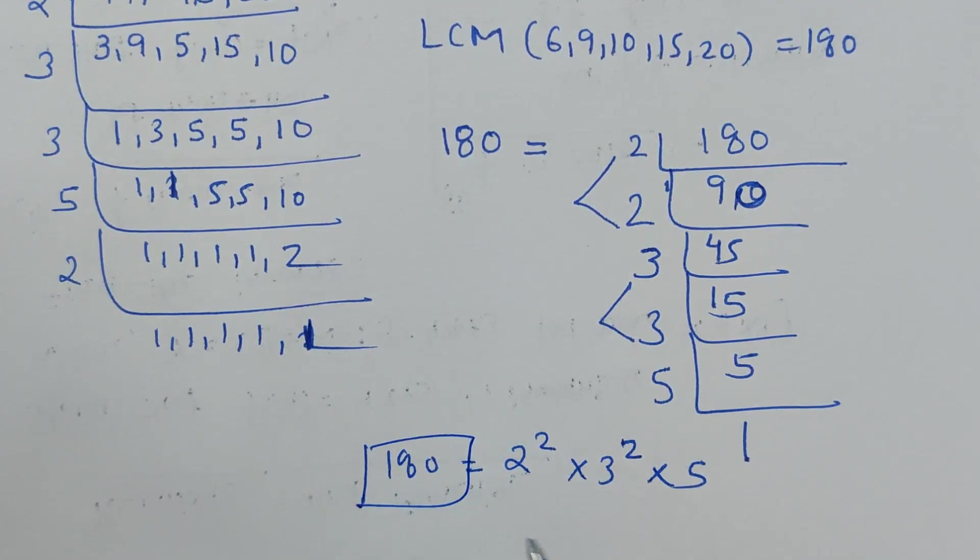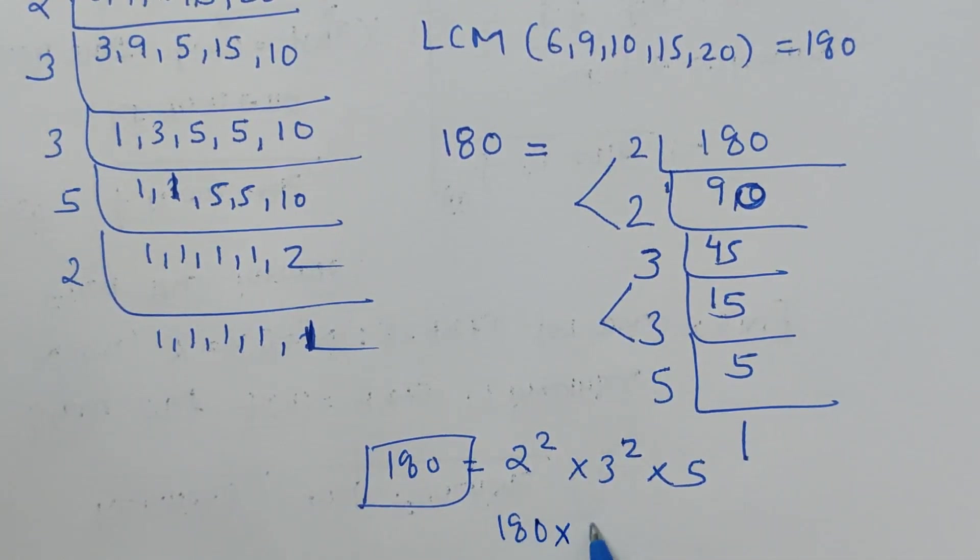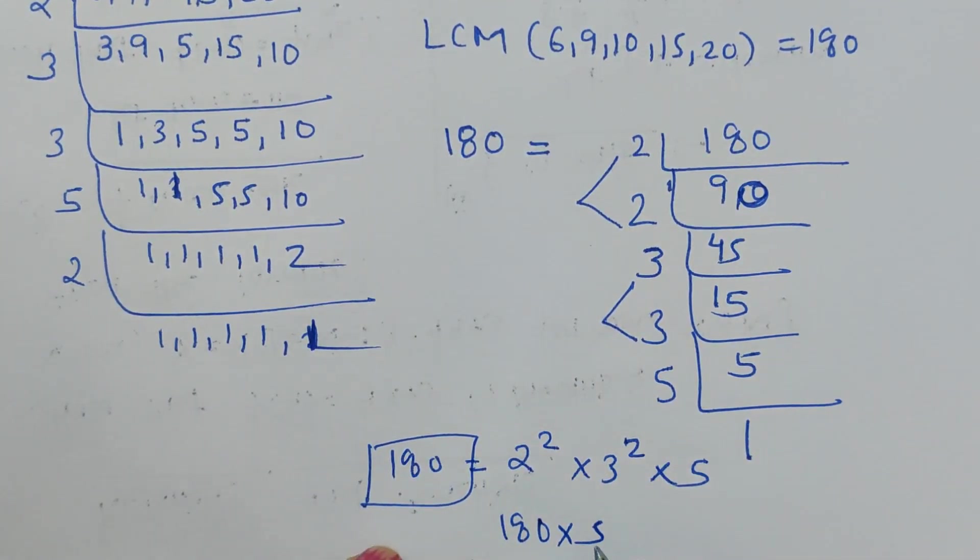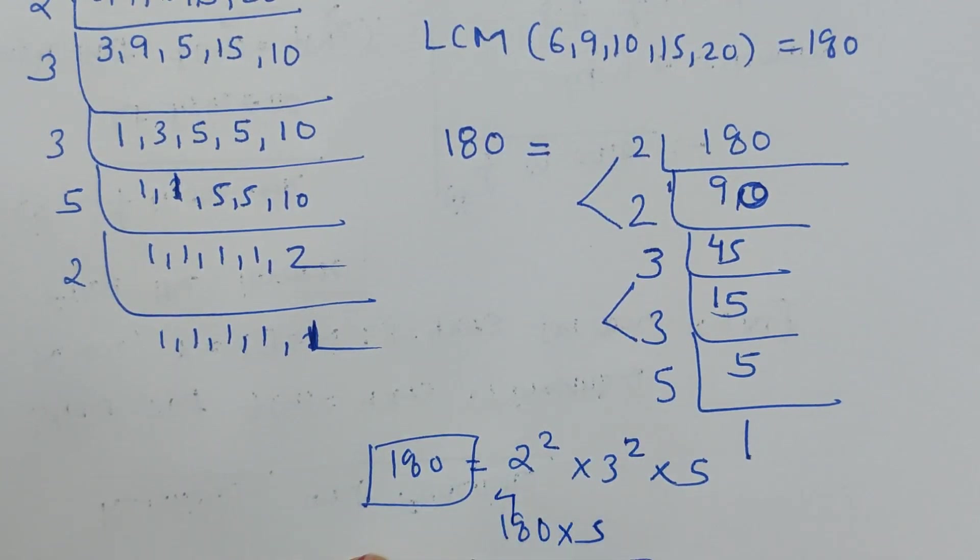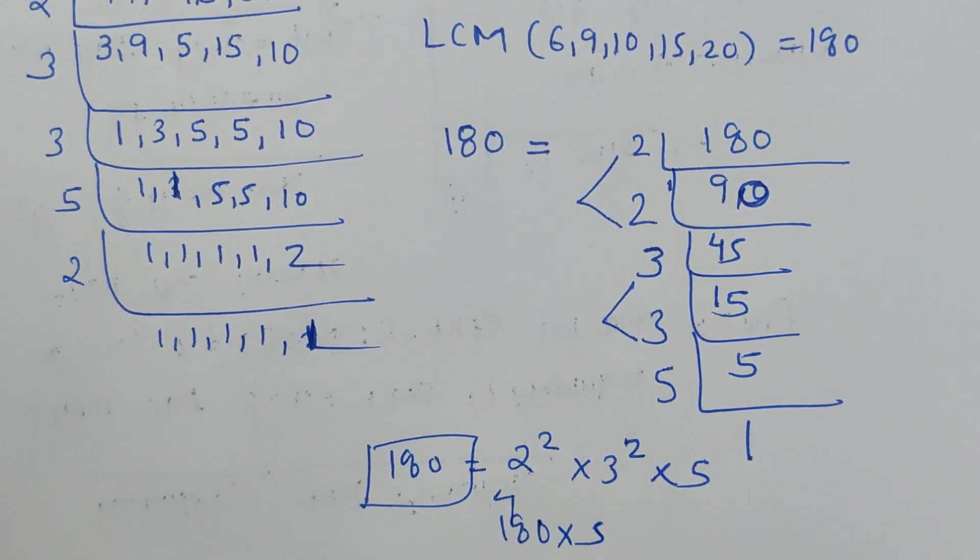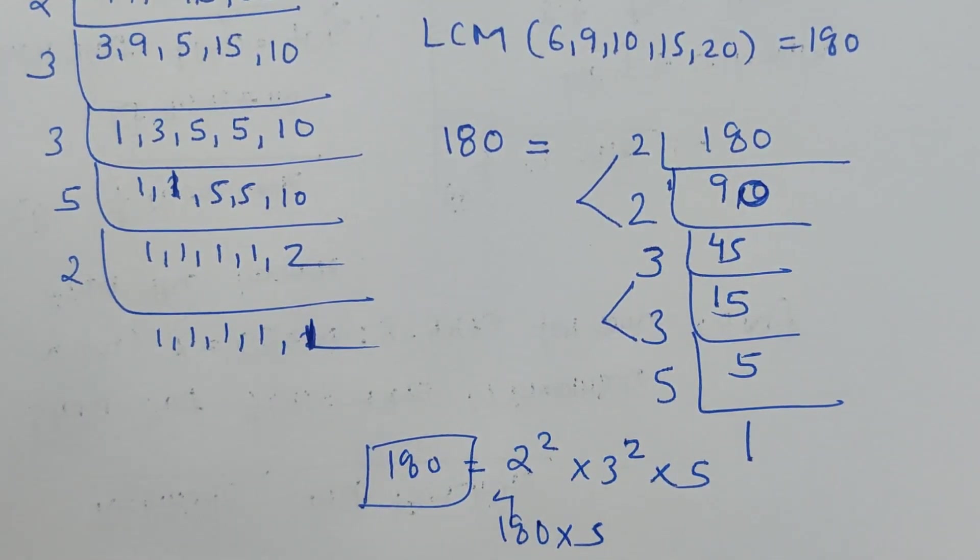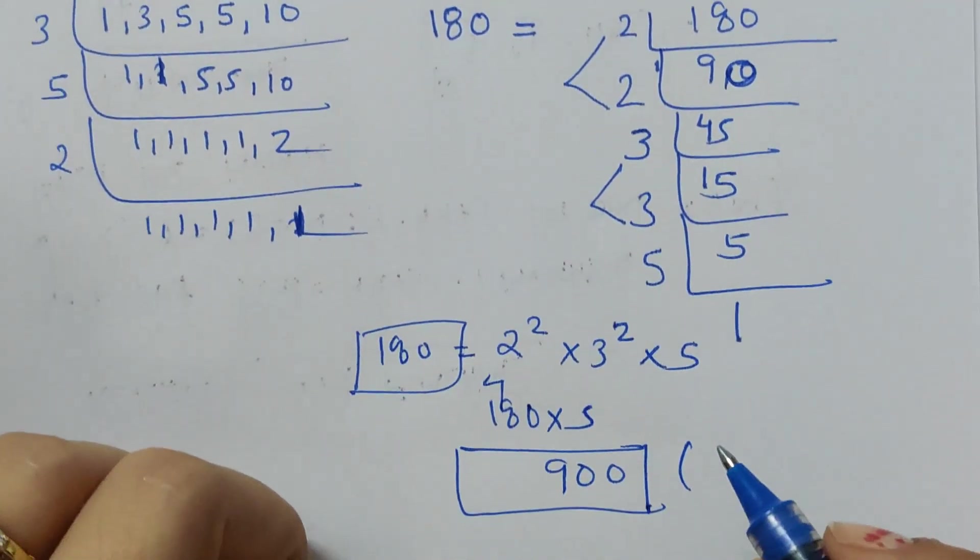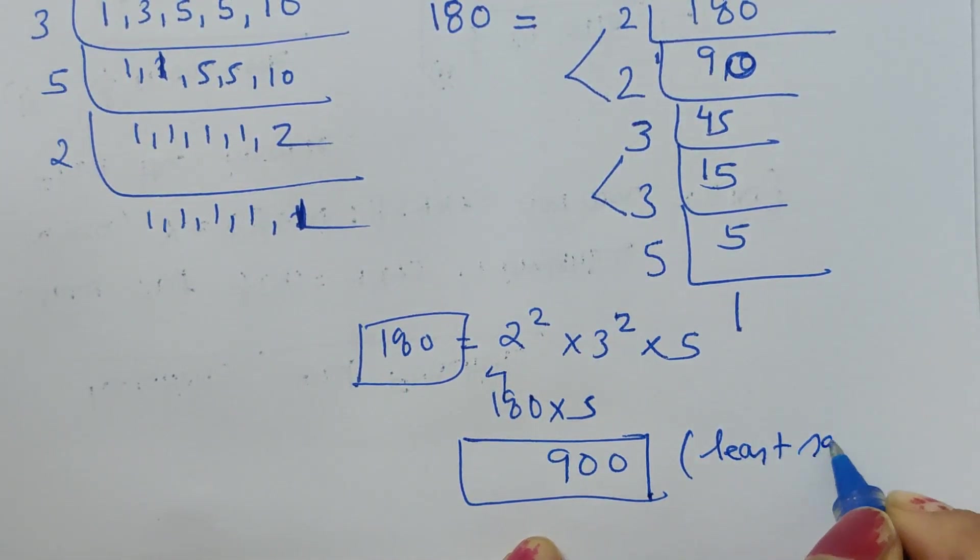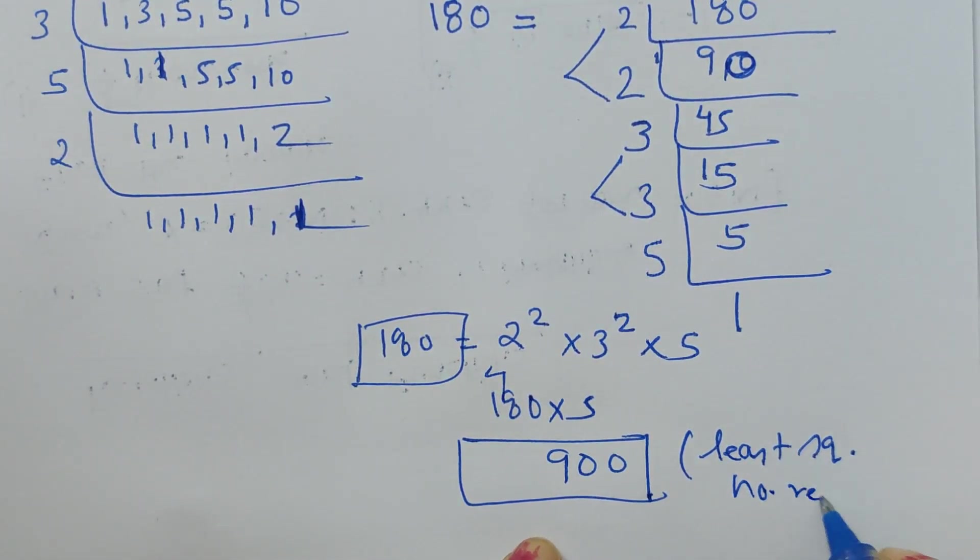So the least number would be 180 times 5. If we do so, 5 times 0 is 0, 5 times 8 is 40, 5 times 1 is 5, so we get 900. This is the least square number required.